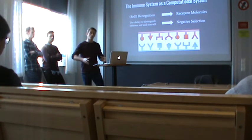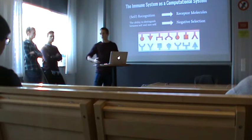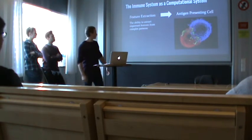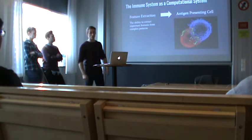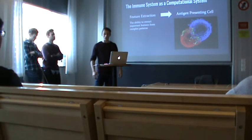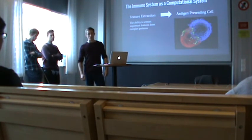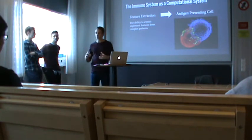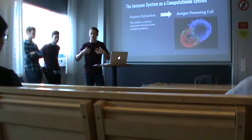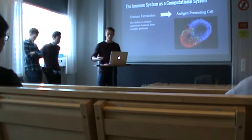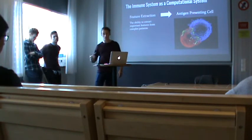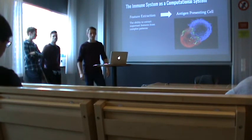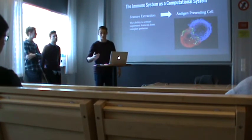Mimicking this negative selection procedure could be very useful in applications such as computer security — for example, detecting novel viruses instead of just matching detected viruses against a list of known ones. Moving on to feature extraction: the immune system does this through antigen-presenting cells, which extract and pre-process the antigen before presenting it to a T-cell. This means the immune system only needs to recognize the pre-processed antigen, storing less information overall. Extracting features is a very contemporary problem within data mining, hence computer scientists are interested in understanding this process.